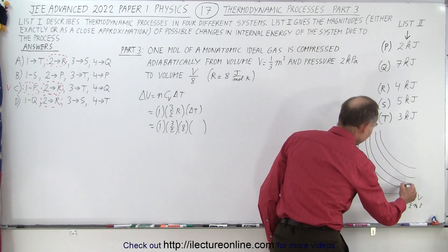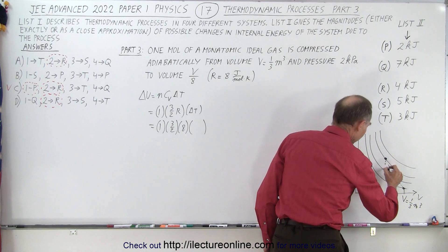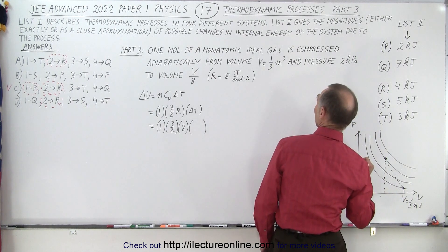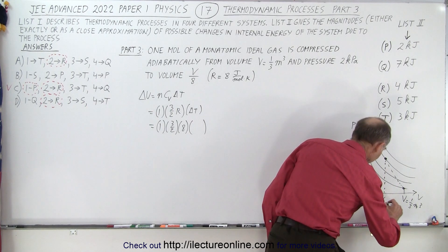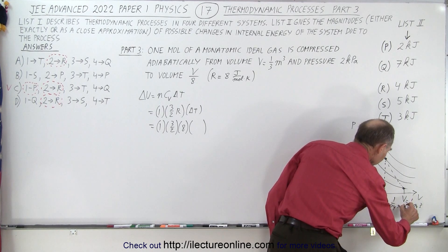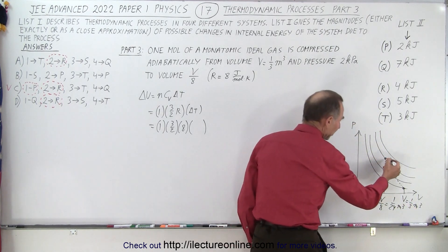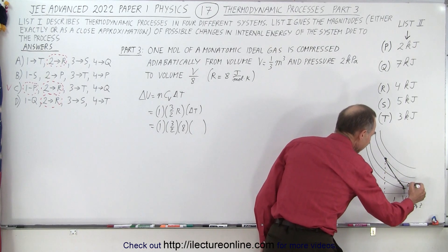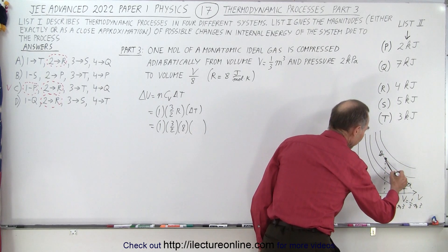We're compressing it adiabatically to another volume V over eight, which would be one-twenty-fourth cubic meters. You can see that we're compressing the gas in this adiabatic process going from A to B along this path right there.